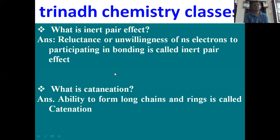Next: what is catenation? Catenation is the ability of an element to form long chains and rings. We call this property catenation.